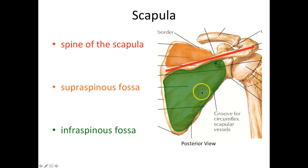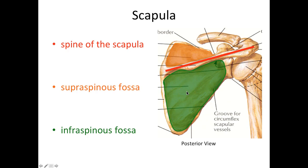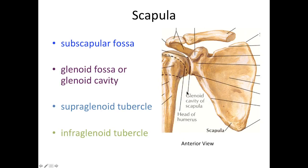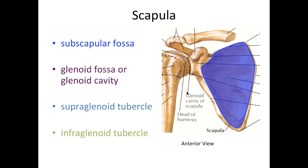You can do the same with infraspinous fossa — infra meaning below, spinous meaning spine, and fossa meaning a shallow depression, so this is a shallow depression below the spine. If you're already feeling overwhelmed with terminology, if you break down these words from your medical terminology background, you should at least have an idea of where these structures are.